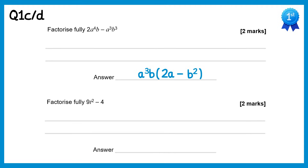For this fourth one it's the difference of two squares — the giveaway is the square numbers 9 and 4. This would factorise to give 3t plus 2 and 3t minus 2.